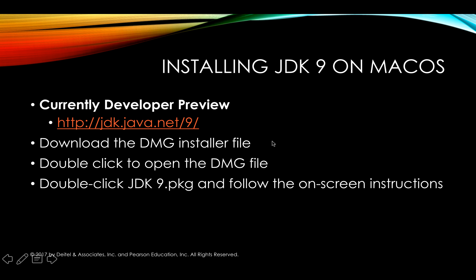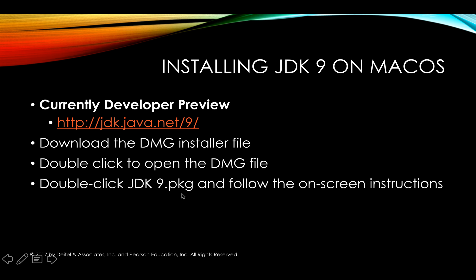The basic install process for JDK 9 on Mac OS is actually quite straightforward. You're going to go get the developer preview, which is the current version available at the time of this recording, from jdk.java.net/9. You're going to download from that web page the DMG installer file. Next, you're going to double-click to open that DMG file, the disk image file, and finally within the window that opens after it verifies the file, you're going to double-click jdk9.pkg and then simply follow the on-screen instructions.